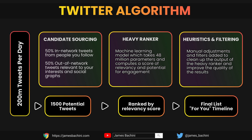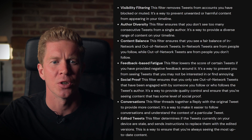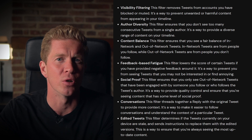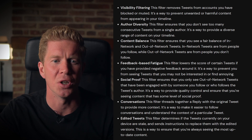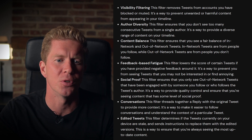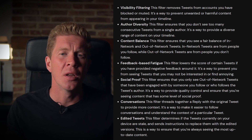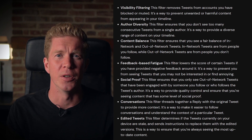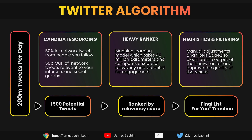The final stage of the home mixer is heuristics and filtering. This takes the ranked tweets from the heavy ranker and applies finishing touches to make them more in line with what Twitter developers want as the finished product in the For You timeline. These include visibility filtering, which removes tweets if you've blocked or muted the author; author diversity, which ensures you don't see too many tweets from the same person; and content balancing, which mixes up the tweets you see across different subjects and authors. All this works together to create a final timeline specifically tailored to you as an individual user, your interests, and the tweets Twitter expects you to engage with to keep you on the platform as long as possible.